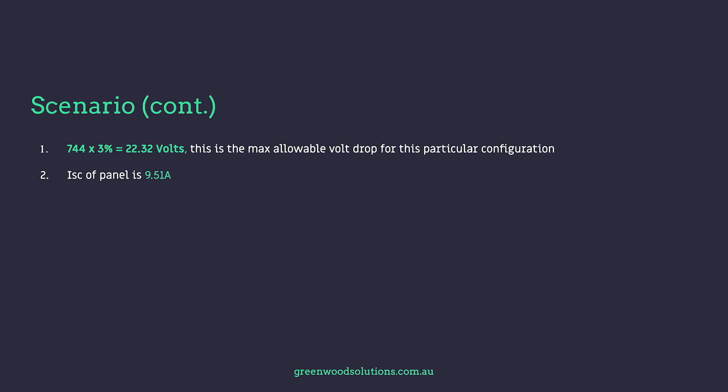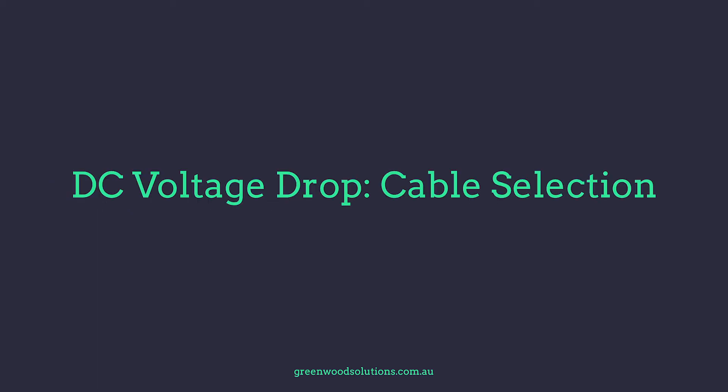We're dealing with a panel that has a short circuit current of 9.51 amps — that's an important figure to remember. Next we look at the cable characteristics, whether it's 4mm, 6mm, or 10mm, for DC Volt Drop cable selection.